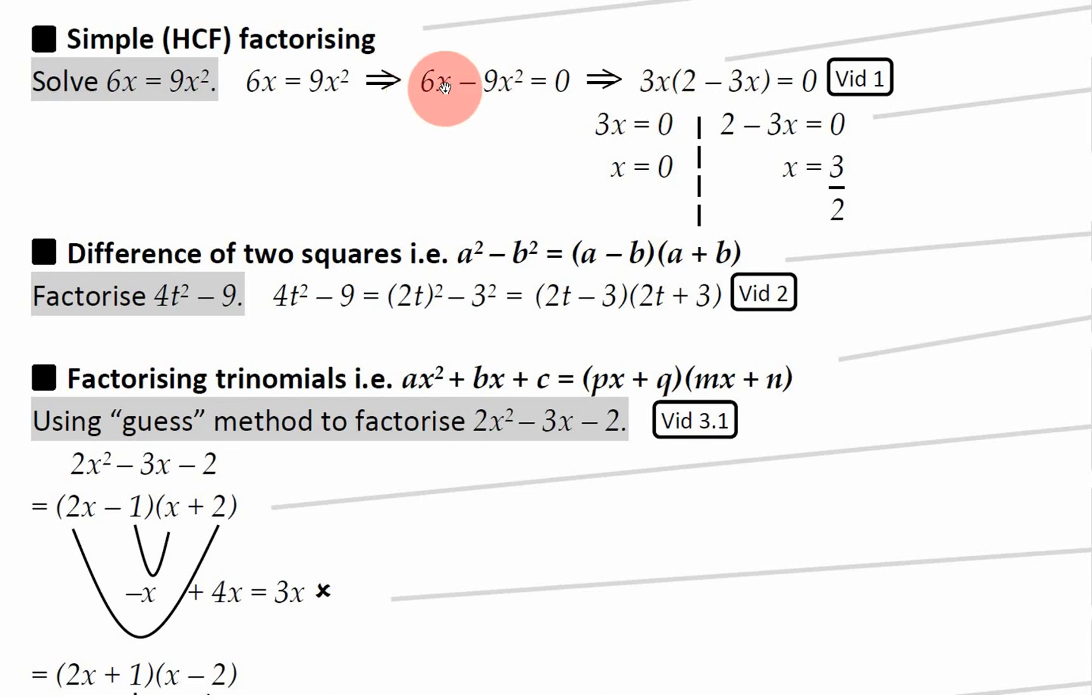We've basically factorized this into that. So since this stuff is equal to 0 and this is just the same as that but just factorized, just written in a different way, this is also equal to 0.